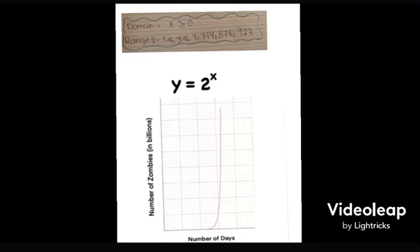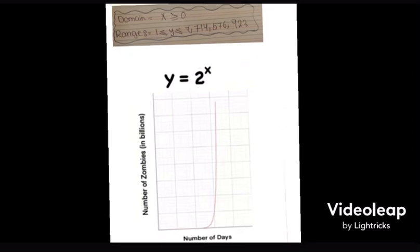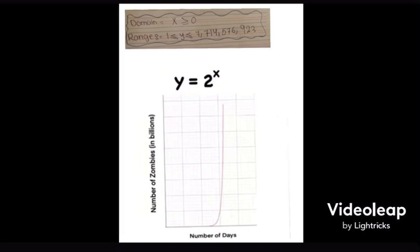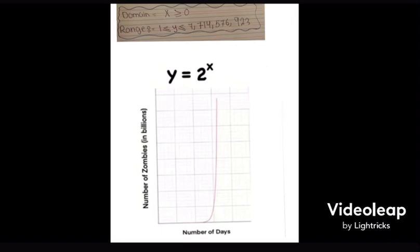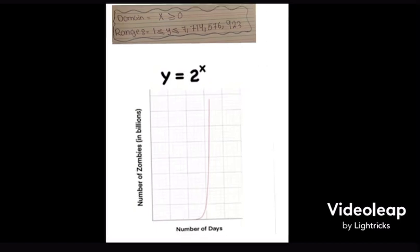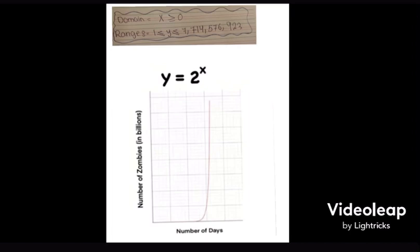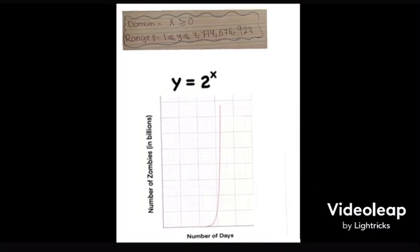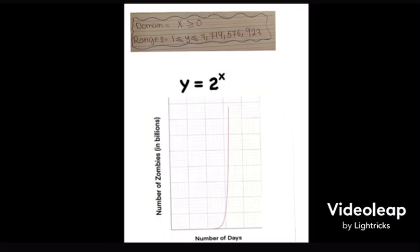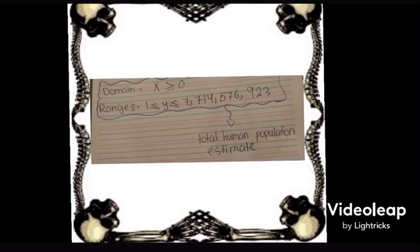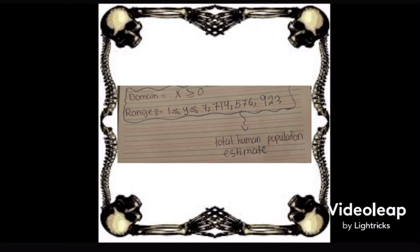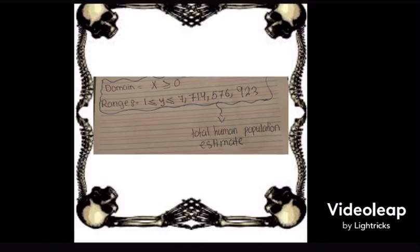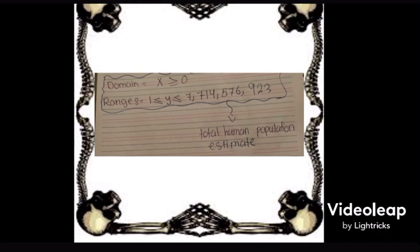So the domain for this equation is x ≥ 0, since in this situation the equation does not need to include the days before the zombie apocalypse. And the range is 1 ≤ y ≤ 7,714,576,923, since there are only an estimated 7.714 billion humans in fact in total, and there cannot be less than one zombie.